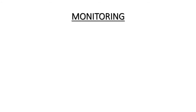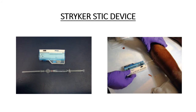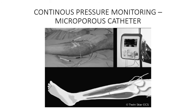To monitor compartment pressure, Whitesides in his classical experiment in the 1960s used a needle manometer method: a needle inserted into the tissue is connected to a three-way stopcock linked to an IV set, a manometer, and a syringe containing air. A better and portable device is the Stryker device, where a needle is inserted and the device directly reads intracompartmental pressure. There is also the microporous catheter device for continuous pressure monitoring, useful for serial and continuous measurement.